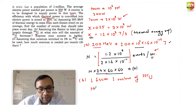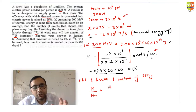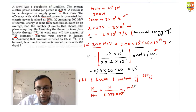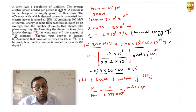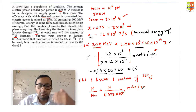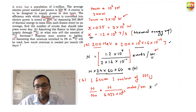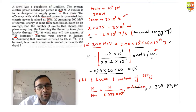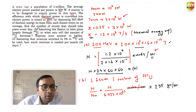To find the mass rate of consumption, divide N by Avogadro's number (6.023 × 10²³) to get the number of moles consumed per second. Then multiply by the molar mass of 235 to get grams per second consumed. Divide by 1000 to convert to kilograms per second.